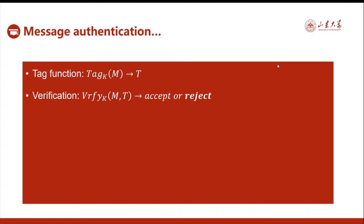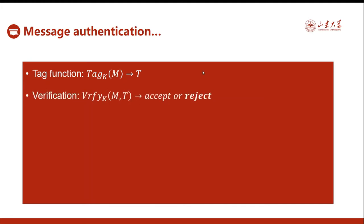We will first recall something about Message Authentication. Message Authentication is a symmetric key crypto system. It has a tag function, taking a message as input and producing a corresponding tag T, and has a verification algorithm. The algorithm takes the message and a specified tag T as input, and outputs either accept or reject. Accept means the message is intact, and reject means the message has been tampered with during transmission.